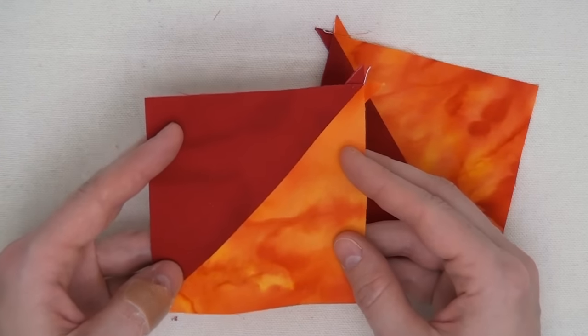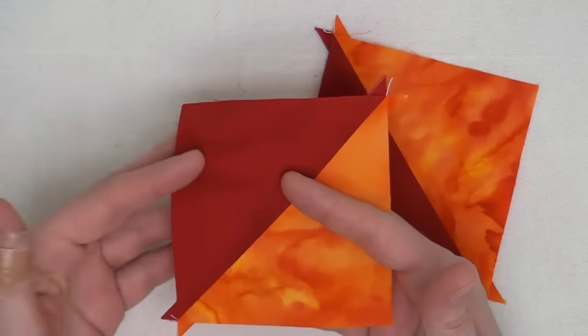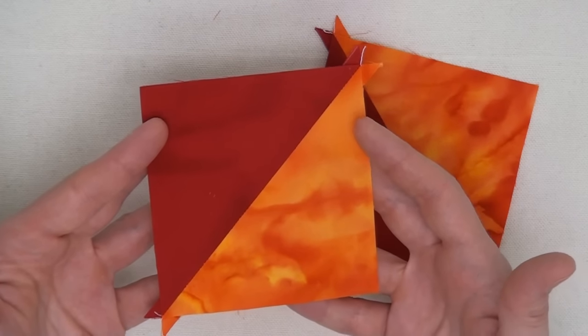Piece all of your half-square triangles this exact same way and refer to your pattern for the size to trim these down to so you're ready to move on to the next step.